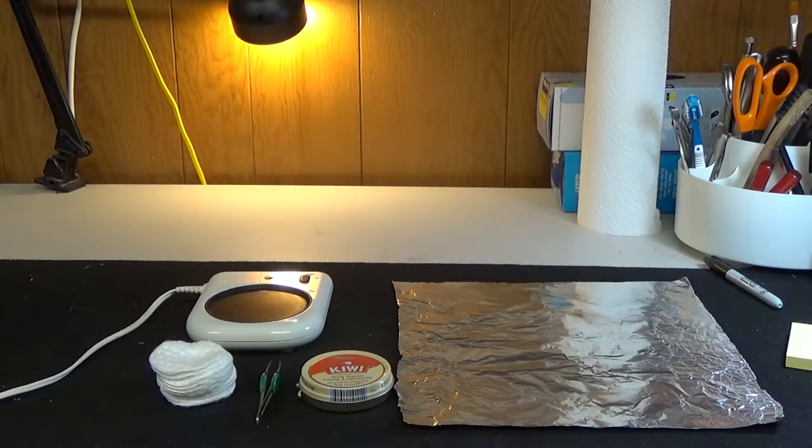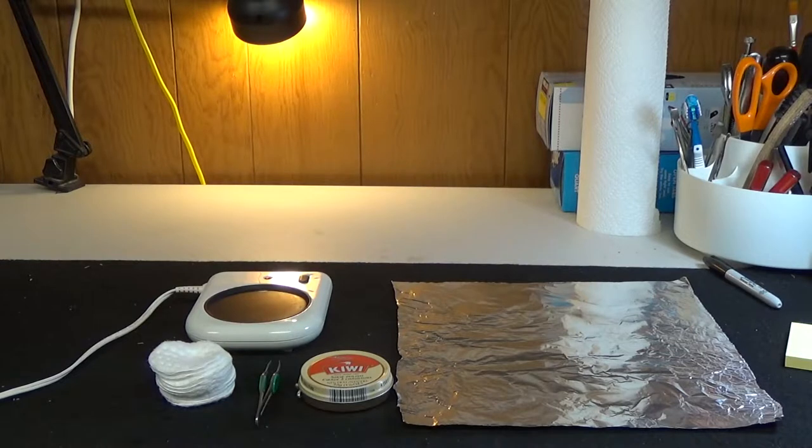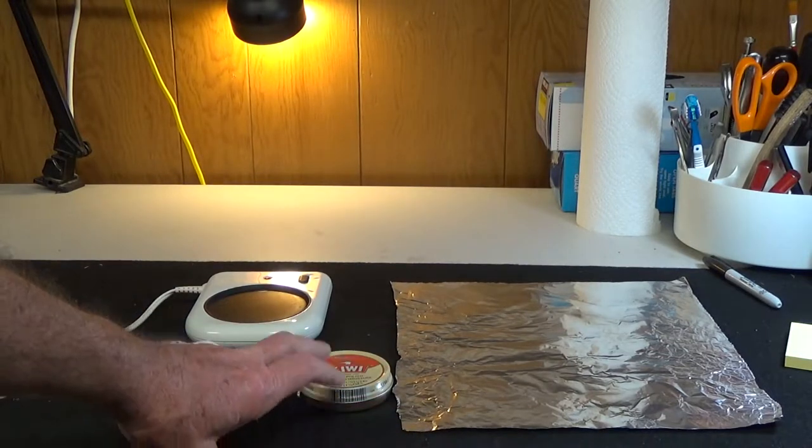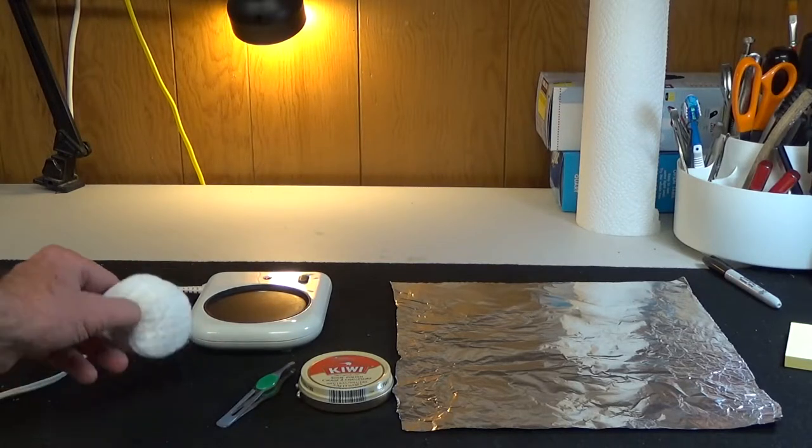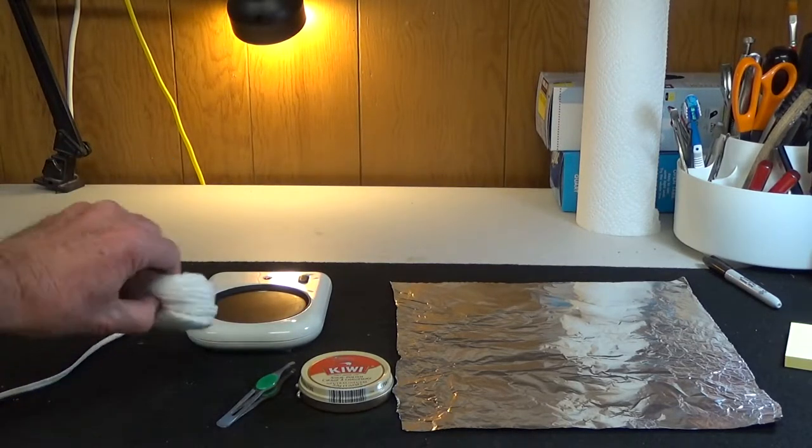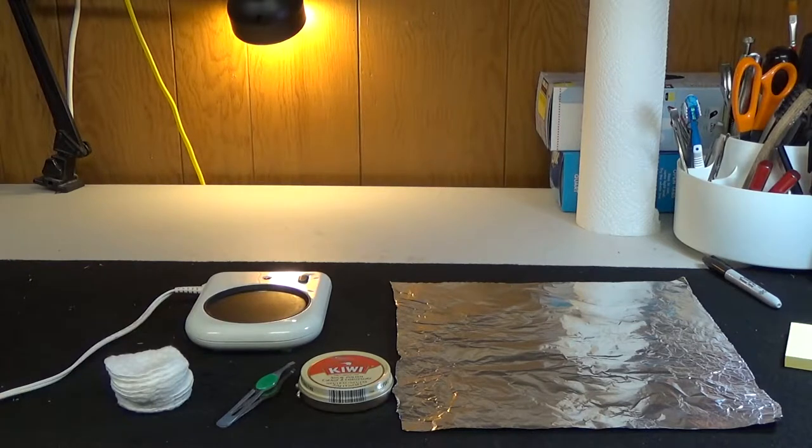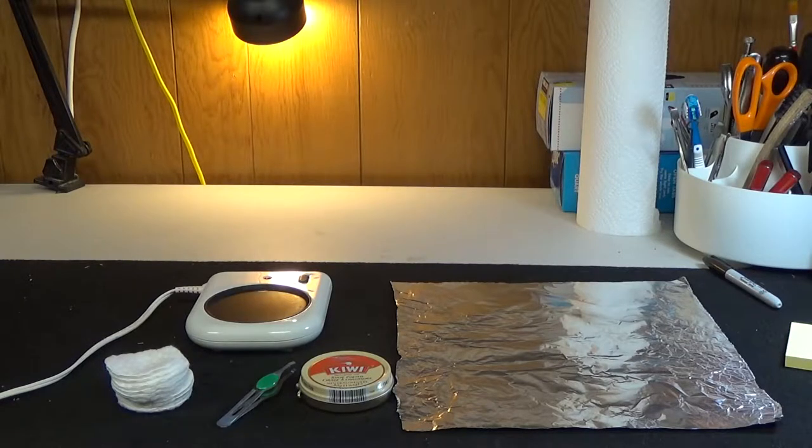What we're going to do is use a piece of aluminum foil, a can of polish, a pair of tweezers, some cotton pads, and a heating source. You can use any heating source. You can even use your camp stove to do this. So I'm going to heat up the polish and we'll go from there.